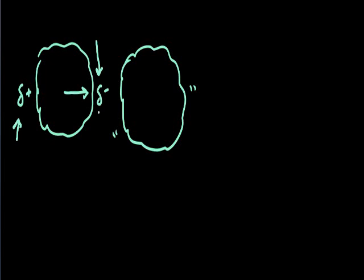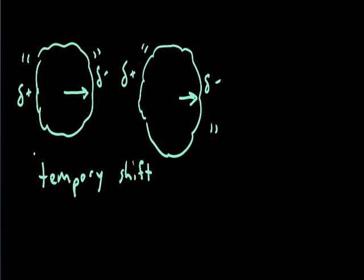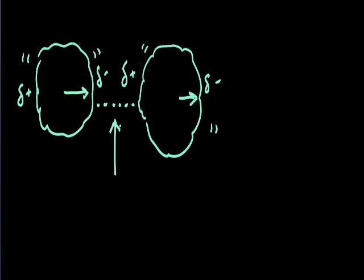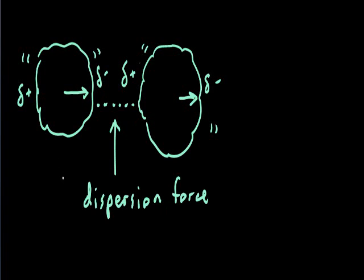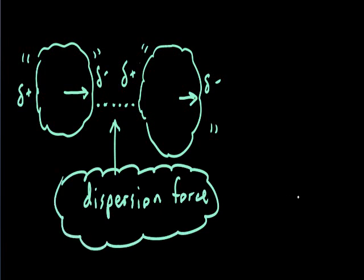The negative from this cloud will induce a shift in the neighboring cloud of a nearby particle, causing the electrons in that cloud to shift, creating a partial positive on one side and a partial negative on the other side temporarily. This is a temporary shift in electron density taking place in the blink of an eye. The force of attraction between these shifting electron densities is known as a dispersion force.